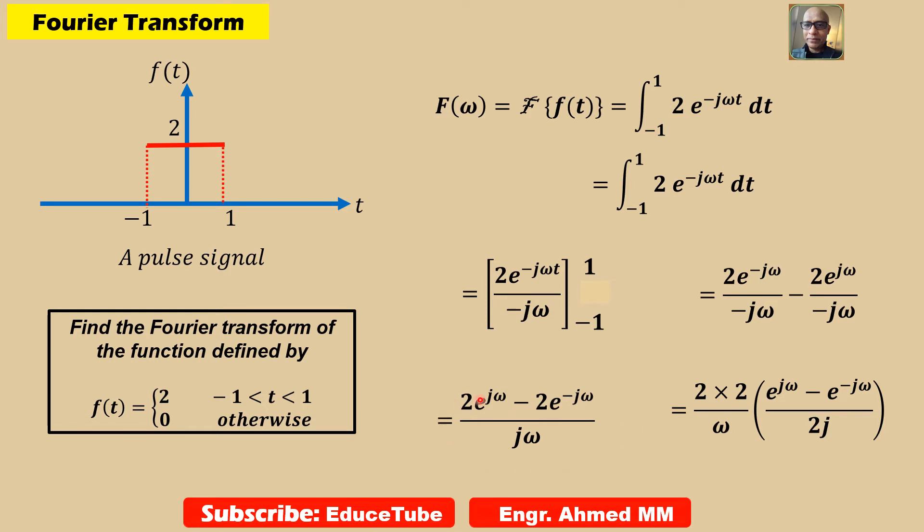Our target is to get this term in a form that satisfies Euler's relation. We take 2 out as a common factor and arrange the expression to get the format we need.